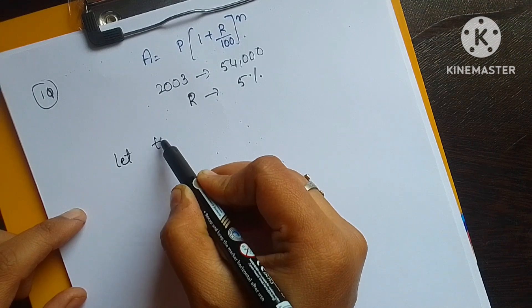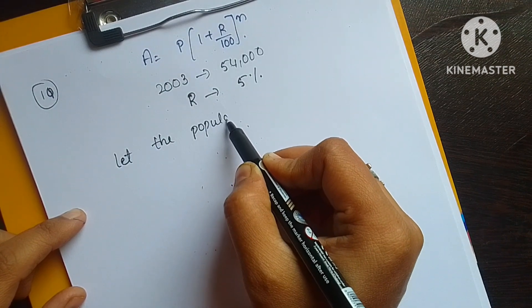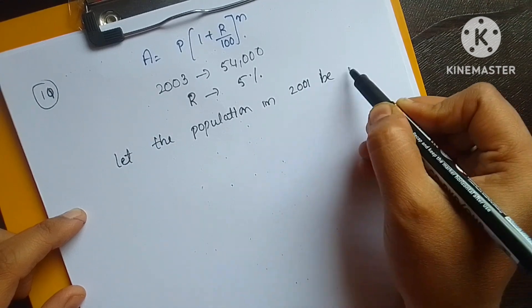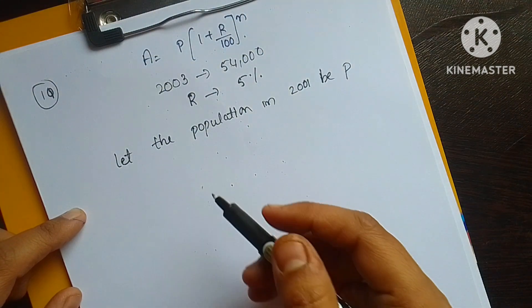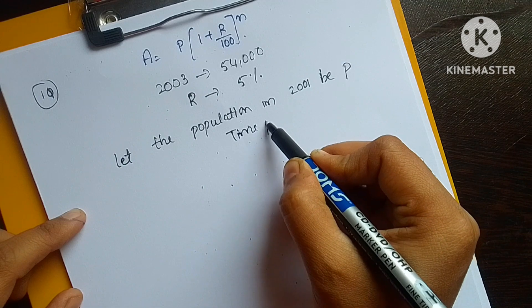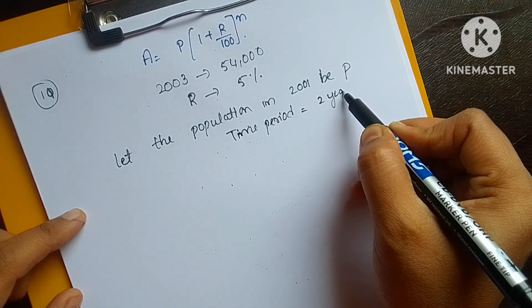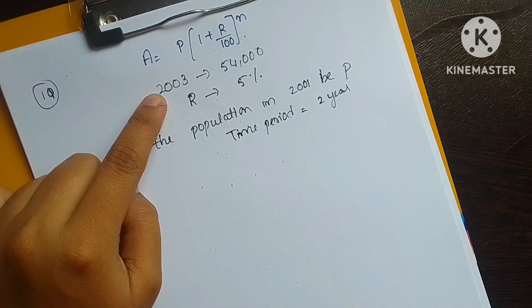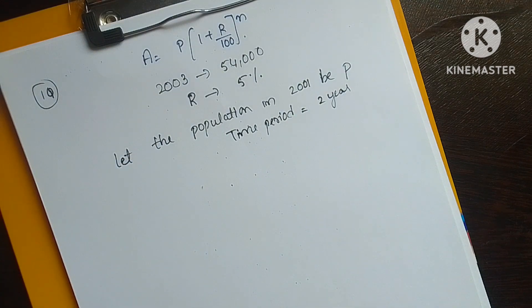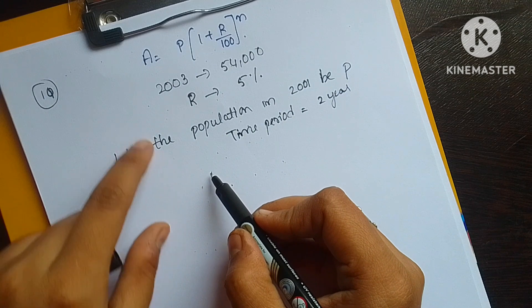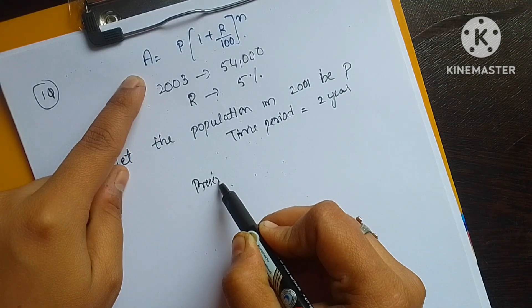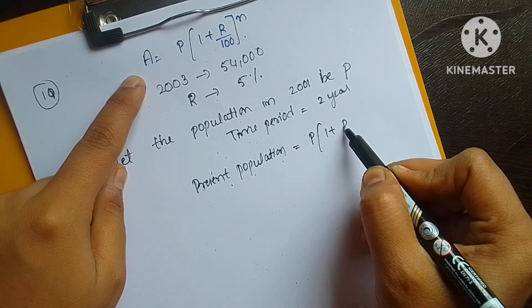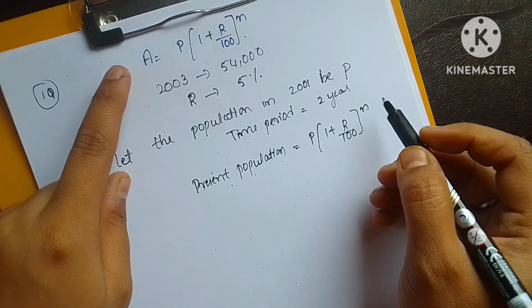Let the population in 2001 be P — we don't know that value. The time period is 2 years, since the present population is 2003 and we are asked to calculate for 2001, which is 2 years before. So, present population equals P into (1 + R/100) to the power N.